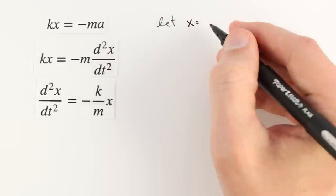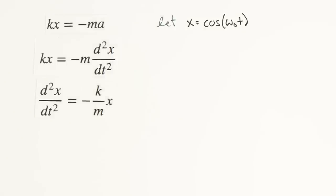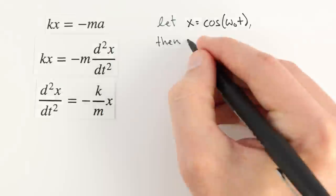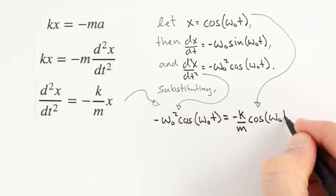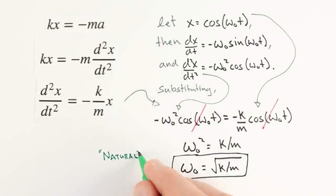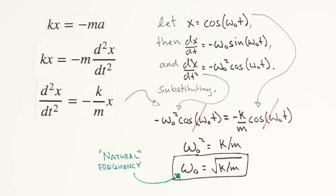Since different springs oscillate at different rates, we'll add a frequency term omega zero to our cosine solution to capture this. We'll call omega zero the natural frequency of the oscillator. When we include our constants and work things out, we see that the natural frequency of our oscillator will be equal to the root of k over m.